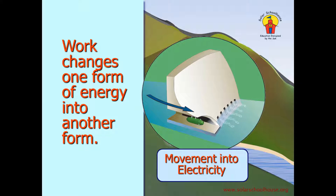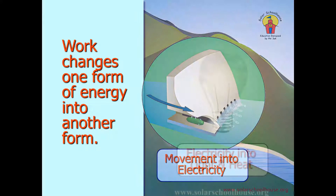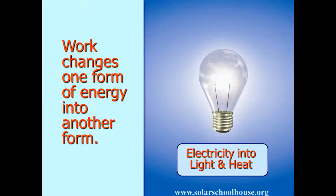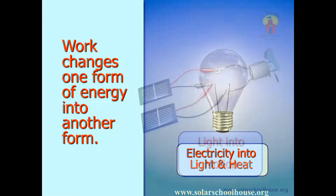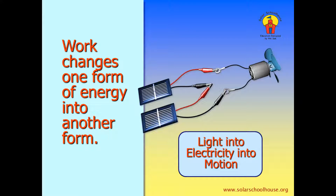There are several different forms of energy. Movement — something moving — is one form of energy. The movement of water, for example, can work to turn a generator in a hydroelectric dam and generate electricity. The energy of moving water is changed or converted by the generator into electrical energy. Electrical energy can also be changed into other forms, like light energy or heat. A solar cell changes the energy of sunlight into electrical energy, and this electrical energy can power a motor and be converted into movement energy.